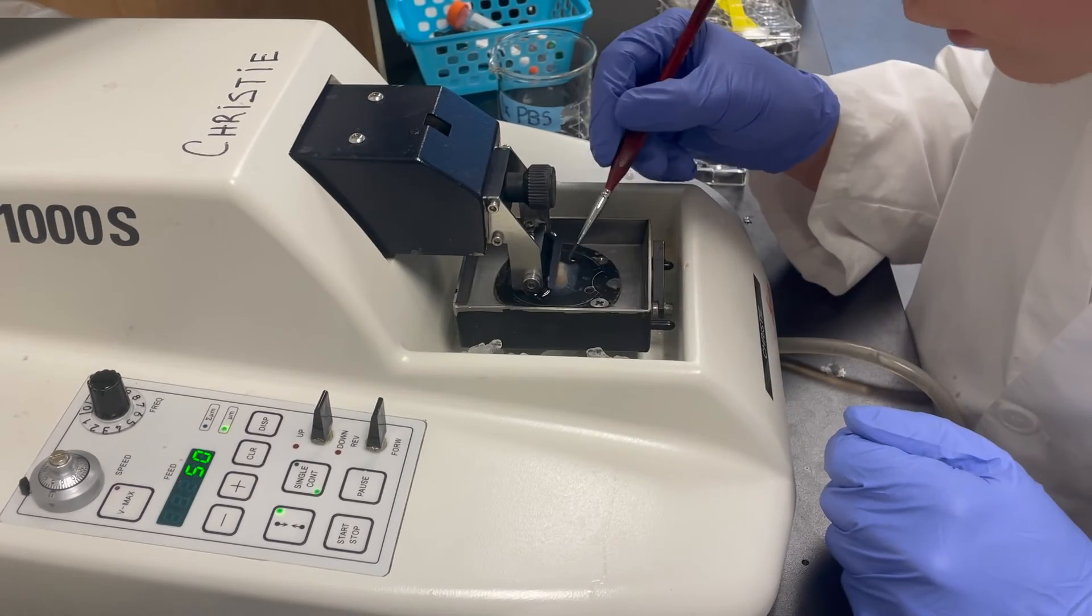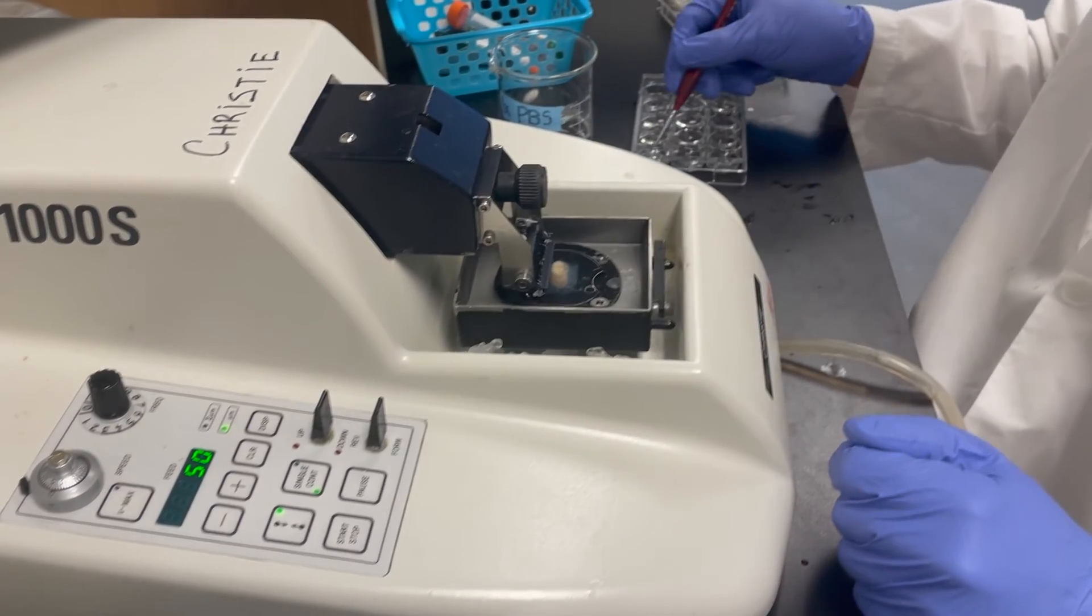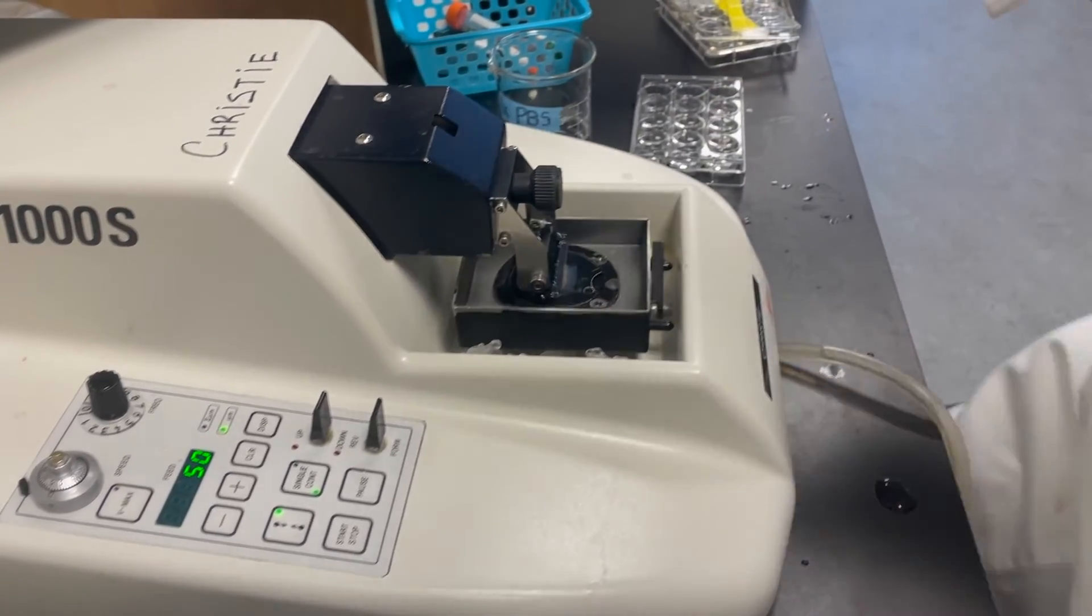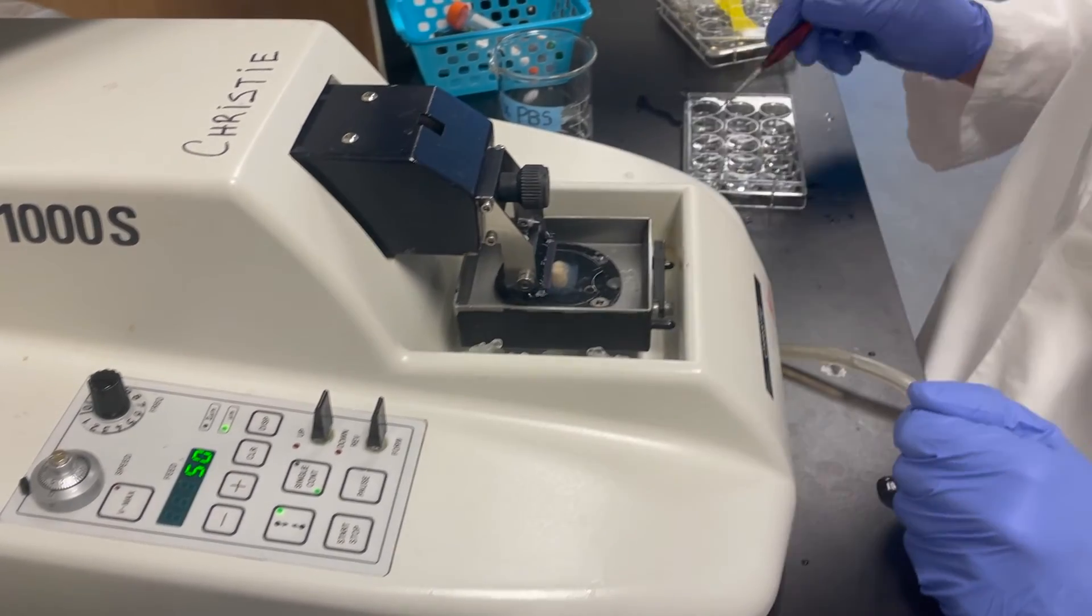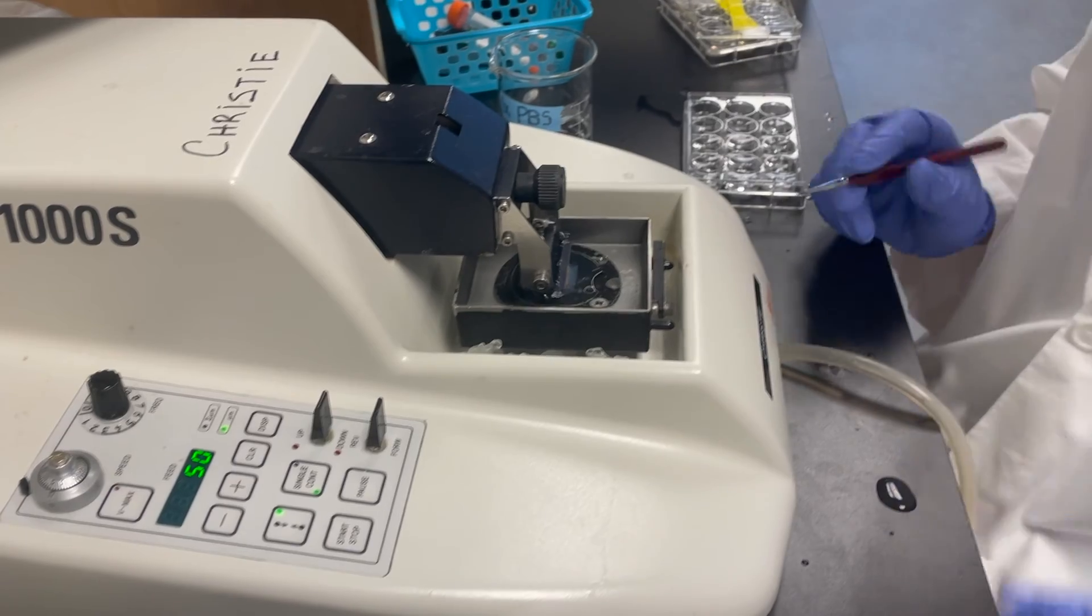We use a fine paint brush to transfer the slices from the tray into the well plates. To keep everything organized for subsequent experiments, slices are transferred in a series of 12, hence why we use the 12 well plates.